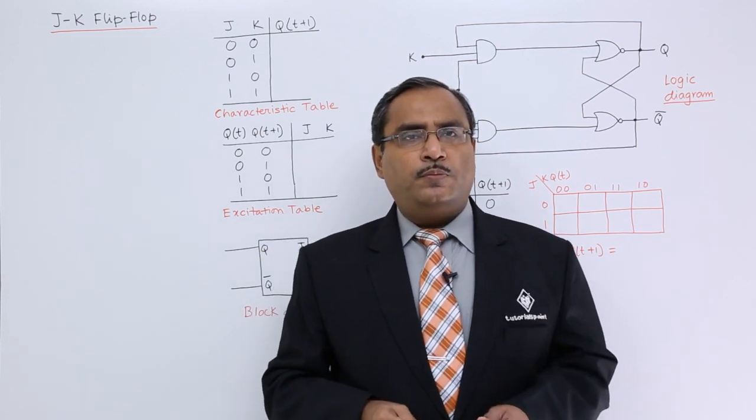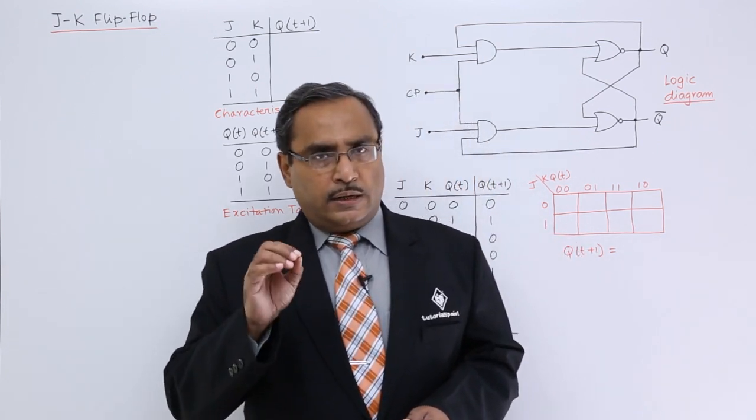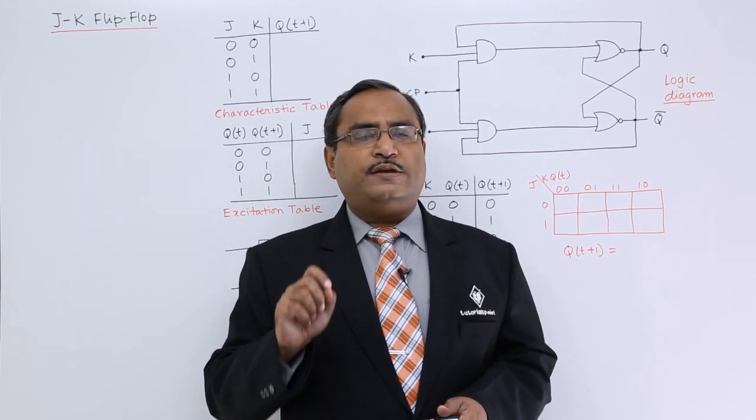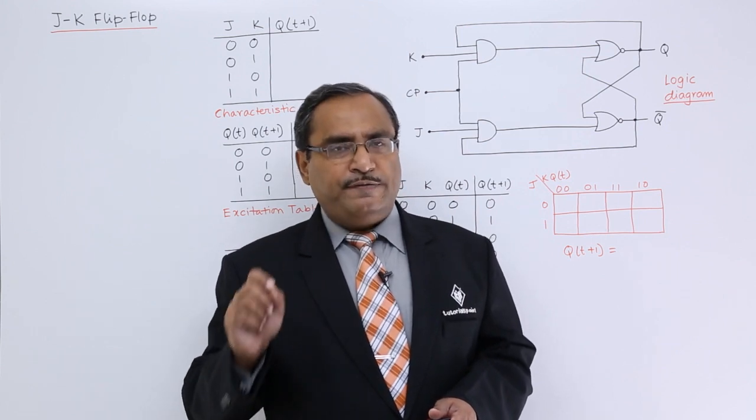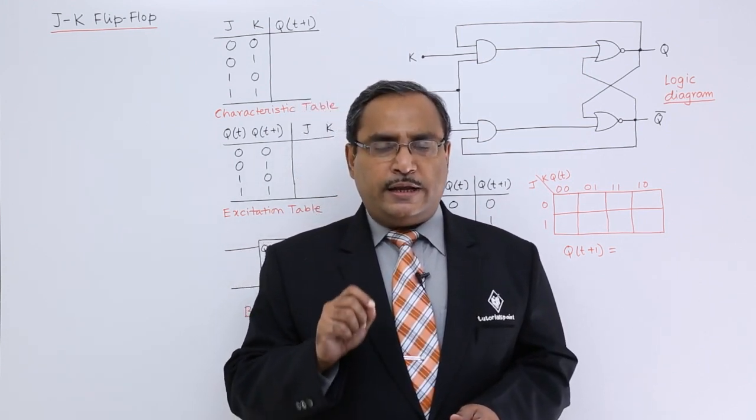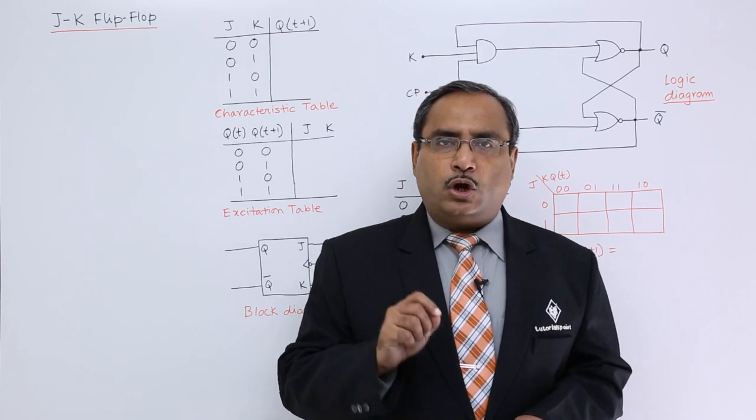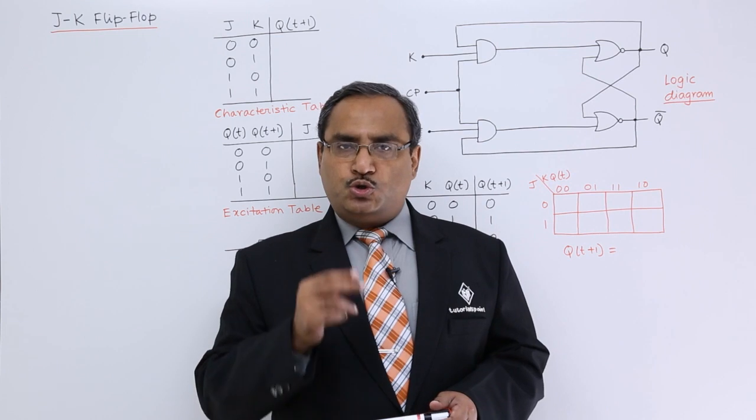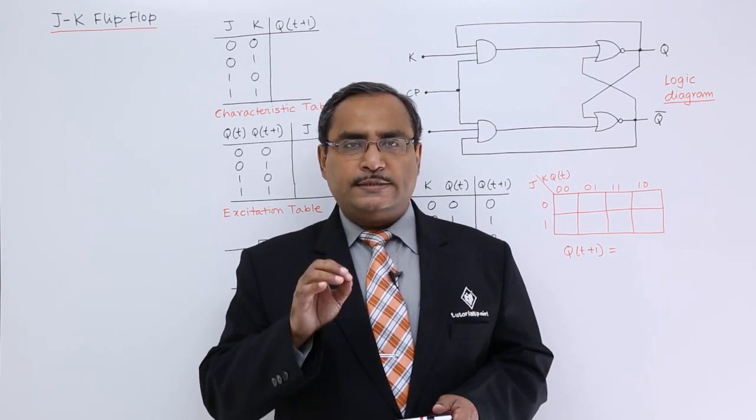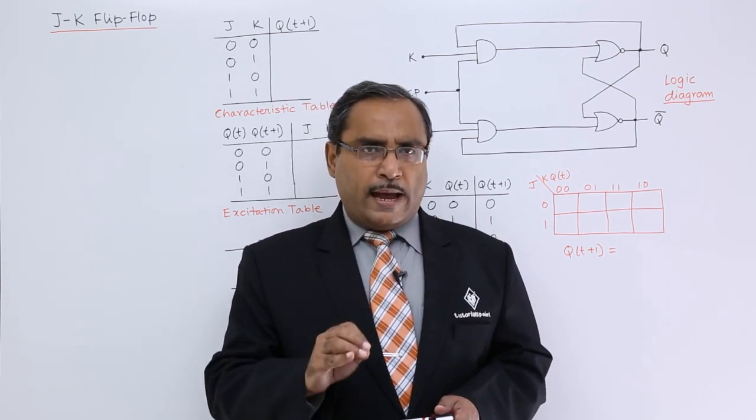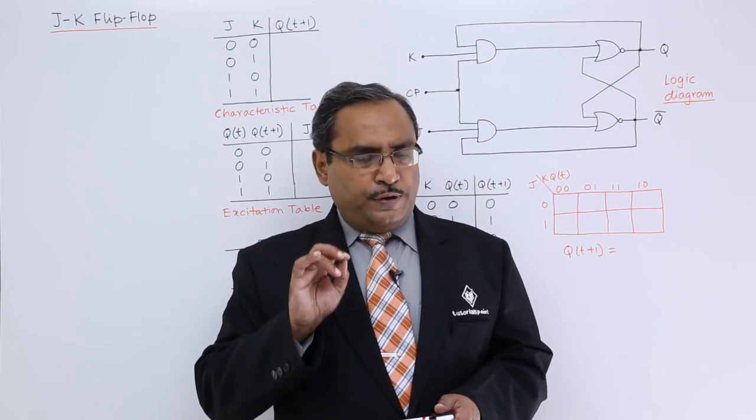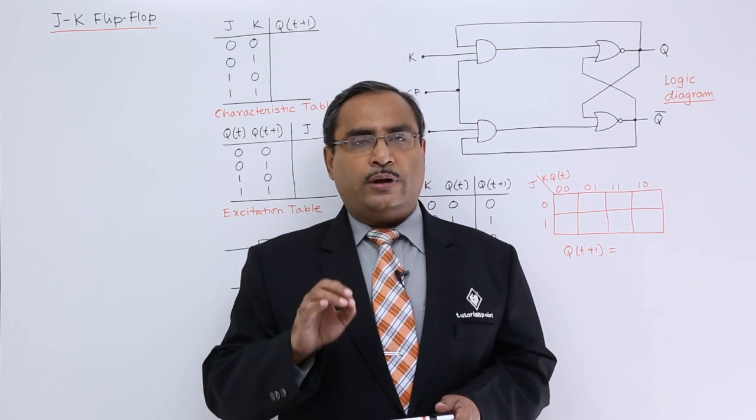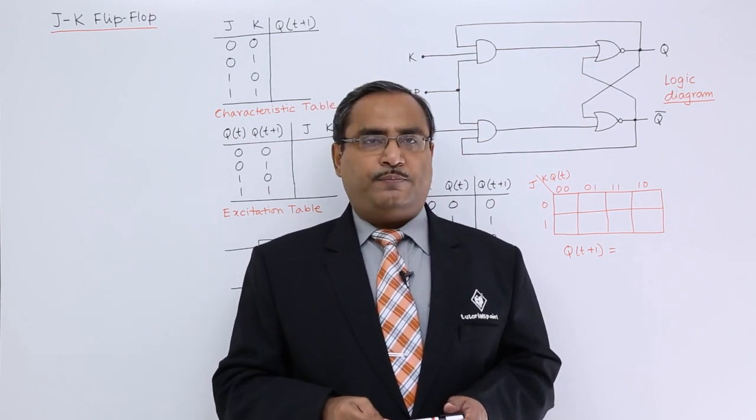In case of J.K. Flip-Flop, we are going to solve the race condition of S.R. Flip-Flop. We know that race condition of S.R. Flip-Flop was solved in D Flip-Flop by connecting S and R inputs through one NOT gate. But D Flip-Flop was having only one input line, so two input combinations are possible, that is 0 and 1. Now I want to have a two input Flip-Flop where the race condition will be resolved and that is the version we are observing in J.K. Flip-Flop.